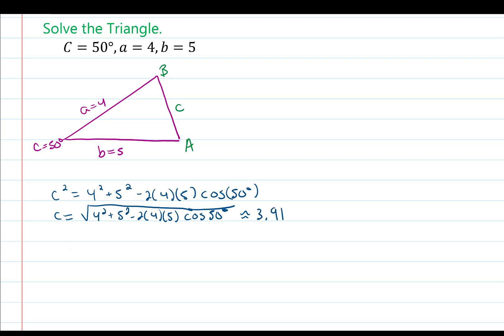Next, we're going to solve for either angle A or angle B — it doesn't matter which one you choose. I chose angle A, so on the right side of the formula I'll have cosine of angle A. That means on the left side I'll have a squared, which is 4 squared, and this equals 5 squared plus 3.91 squared minus 2 times 5 times 3.91 times cosine of angle A.